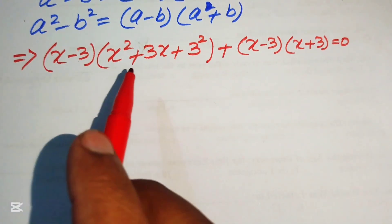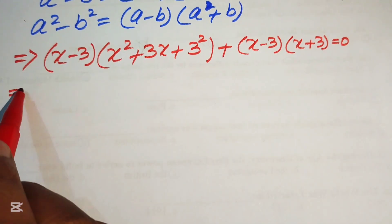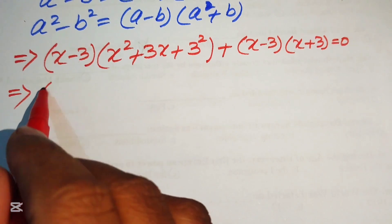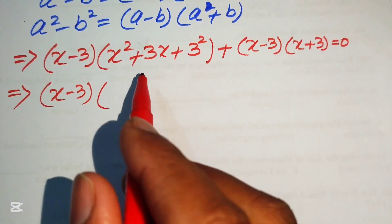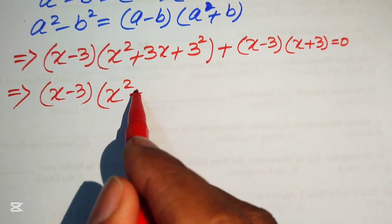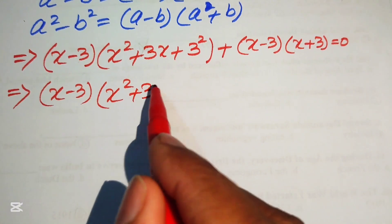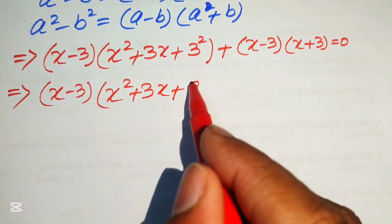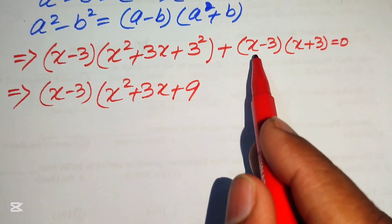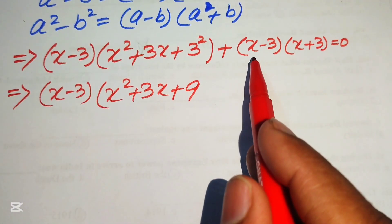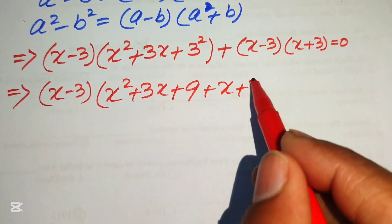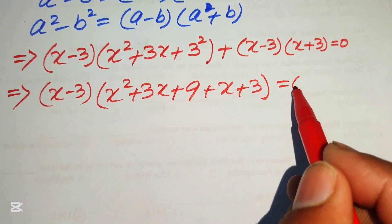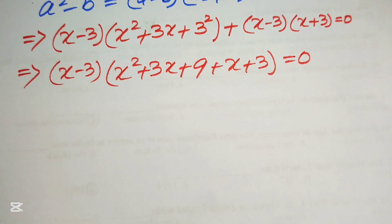We observe that x minus 3 is a common factor in both terms. Factoring it out, the remaining expression in the first group is x squared plus 3x plus 9, and from the second group we have plus x plus 3. So we get x minus 3 times x squared plus 3x plus 9 plus x plus 3 equals 0.